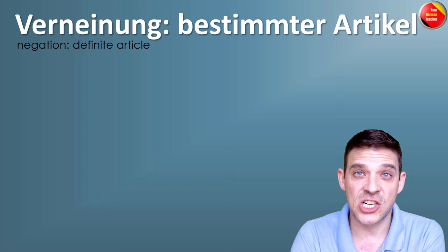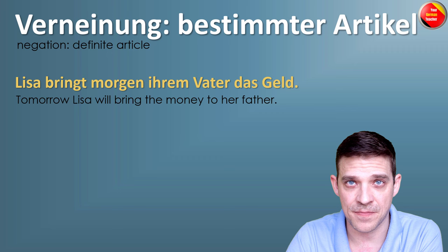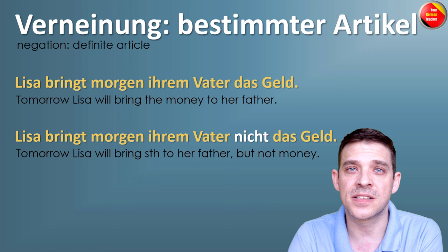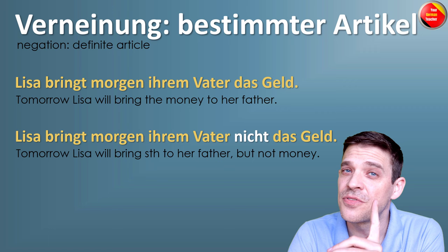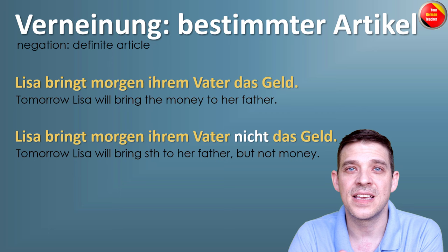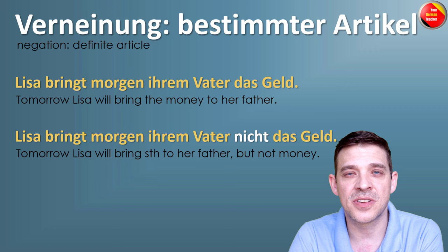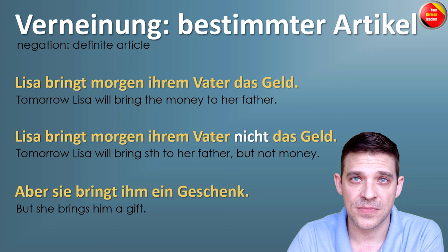Number 4: definite article — bestimmter Artikel. Same sentence: 'Lisa bringt morgen ihrem Vater das Geld.' Das Geld has a definite article. When you want to negate it, it becomes: 'Lisa bringt morgen ihrem Vater nicht das Geld.' Here it's already on the last position — perfect, you don't have to change anything. The meaning is: she brings something to her dad tomorrow, but it's not the money. If you have a negation of a definite article, usually we add information, such as: 'aber sie bringt ihm ein Geschenk' — but she will bring him a gift.